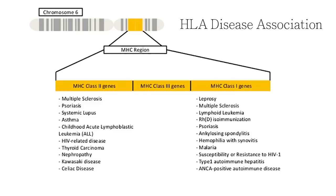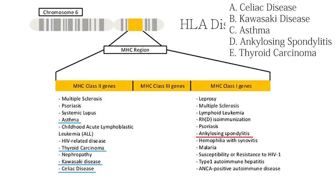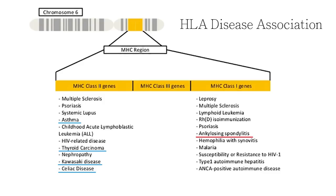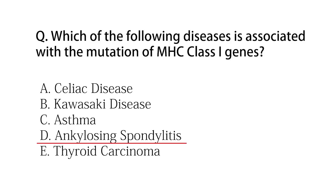Looking at the chart, we can easily differentiate which of the diseases given in the options fall under mutations of MHC class one genes. As you can see, other than option D — that is ankylosing spondylitis — all the other diseases fall under MHC class two gene mutations. So the answer here is D.